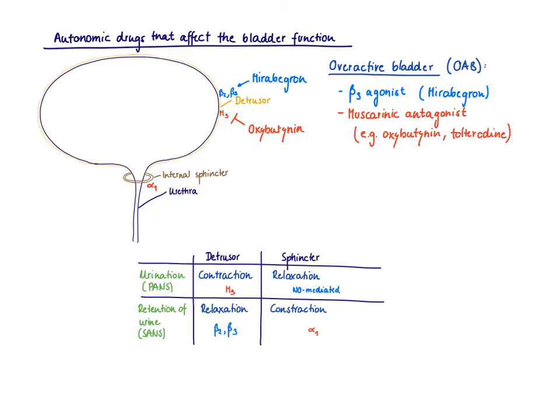Another option to relax the detrusor muscle is to block the M3 receptors. Remember, M3 mediates smooth muscle contraction because it's Gq coupled. And therefore, if you block this with a muscarinic antagonist, you can mediate smooth muscle relaxation. There are quite a lot of different muscarinic antagonists approved for the treatment of overactive bladder. I have listed here oxybutynin and tolterodine, which are used a lot to treat overactive bladder.